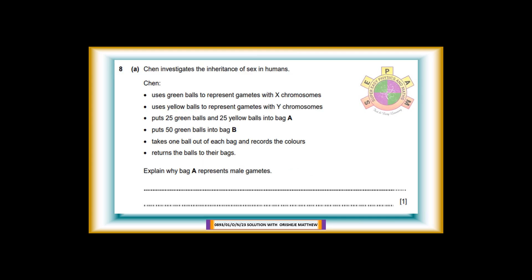Question 8. 8a: Chun investigates the inheritance of sex in humans. Chun uses green balls to represent gametes with X chromosomes, uses yellow balls to represent gametes with Y chromosomes, puts 25 green balls and 25 yellow balls into bag A, puts 50 green balls into bag B, takes one ball out of each bag and records the colors, returns the balls to their bags. Explain why bag A represents male gametes. For 1 mark. Answer: Contains X and Y chromosomes.